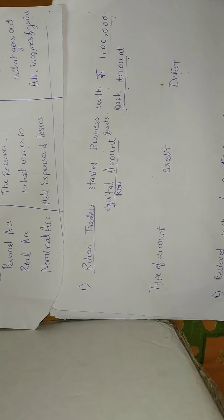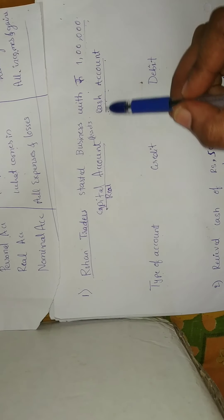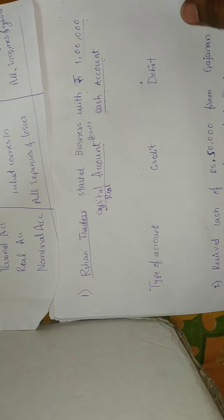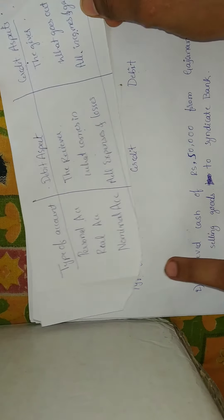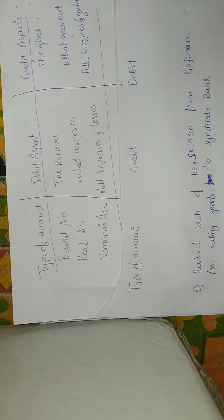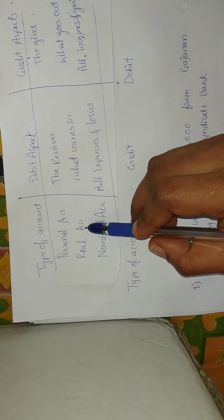At the end of the financial year, or whenever the company is shut down, this capital amount has to be returned to the shareholders or the owner. So the capital account comes under liability in the balance sheet. We have now identified both accounts: cash account and capital account. Cash account comes under real account — assets like buildings, land, furniture, goods, and cash all come under real account.